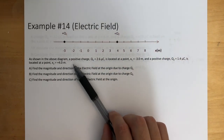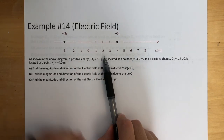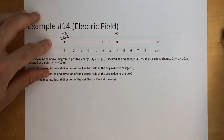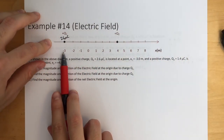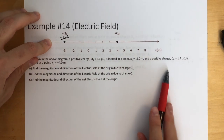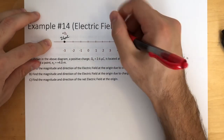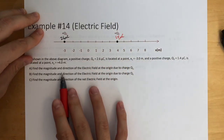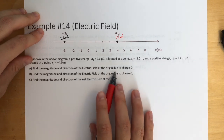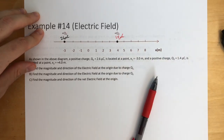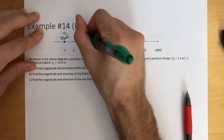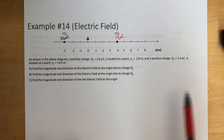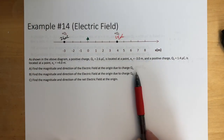So as shown in the diagram above, a positive charge q1 is 2.6 microcoulombs, located at negative 3 meters. And a positive charge q2 is equal to 1.4 microcoulombs, located at 4 meters. Find the magnitude and direction of the electric field at the origin due to charge q1.